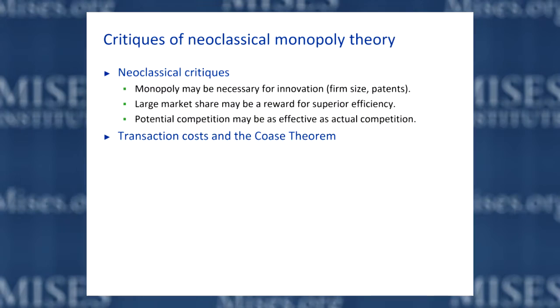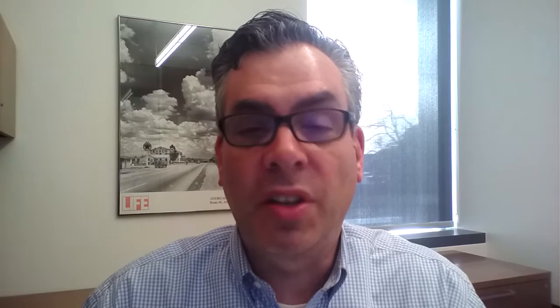What we want to really focus on here are the Austrian critiques. Armentano does a nice job summarizing the standard theory and explaining some things that are wrong with it. For example, Armentano points out correctly — as I've already emphasized — that perfect competition is not only impossible, but sort of irrelevant. Why would we want to evaluate the properties of actual real-world markets according to how closely they approximate this weird, totally hypothetical, abstract model of perfection, which just doesn't have any bearing on actual markets or real behavior? It doesn't make any sense to evaluate markets according to how close they are to perfect competition.